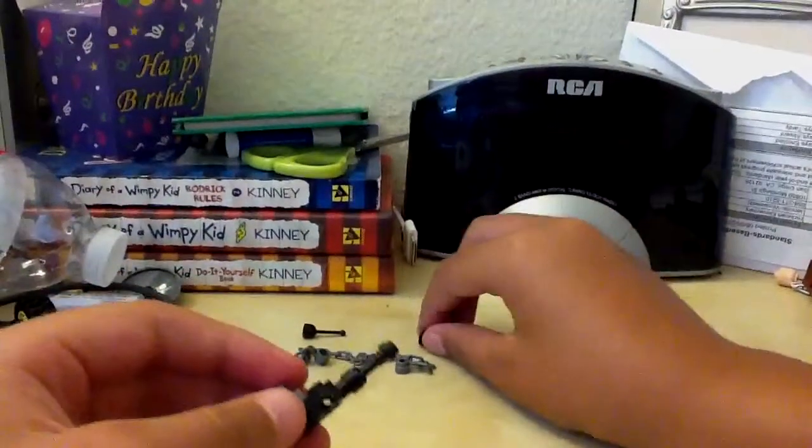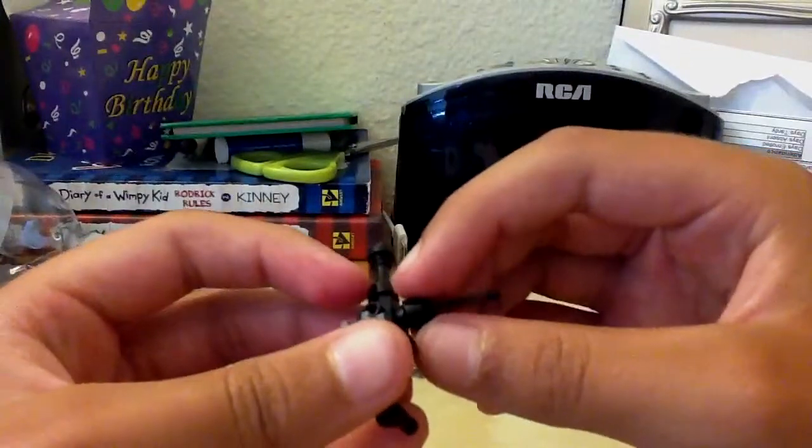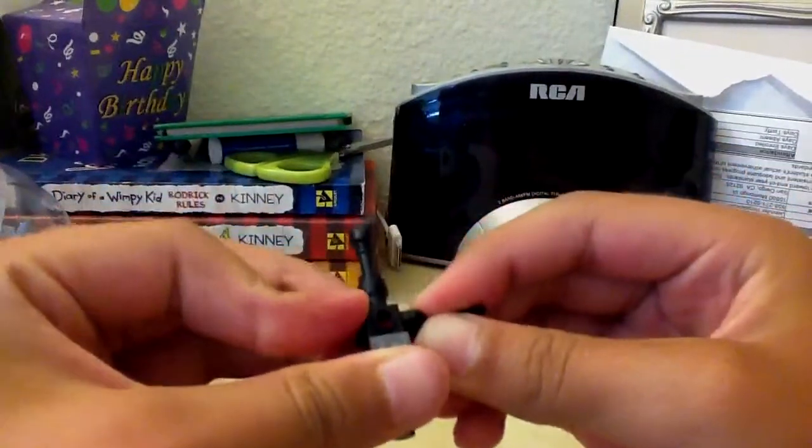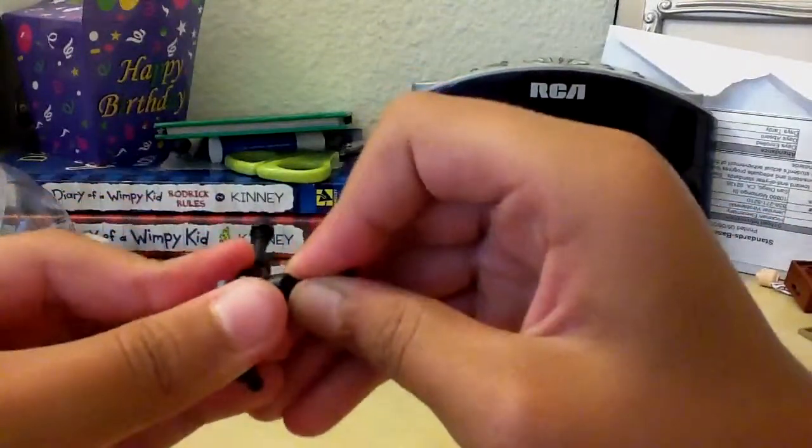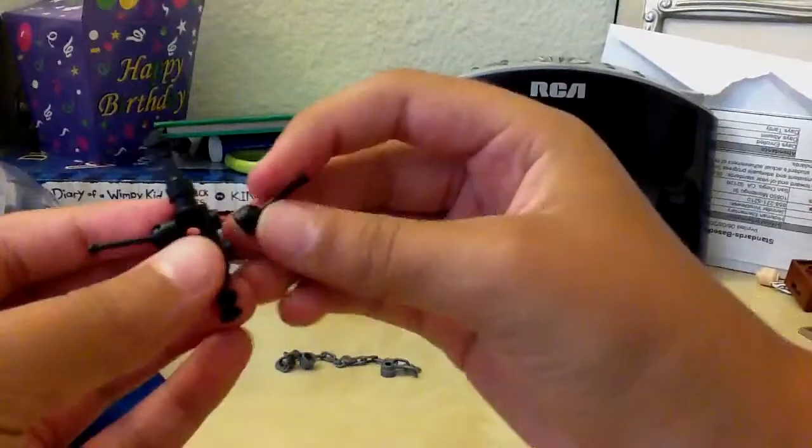Then you grab these two handles and put them at the side so that you can make a bipod.